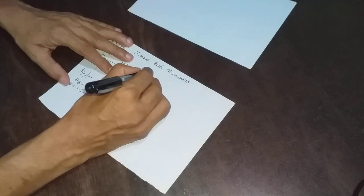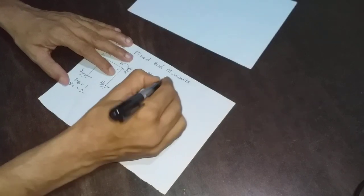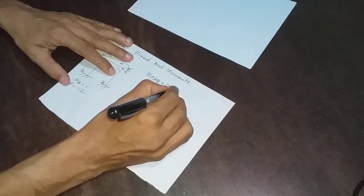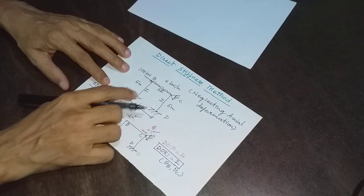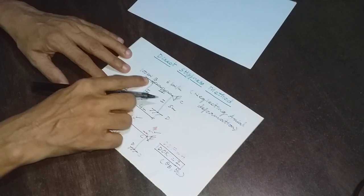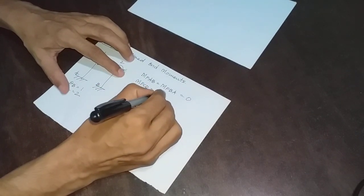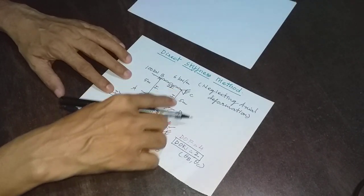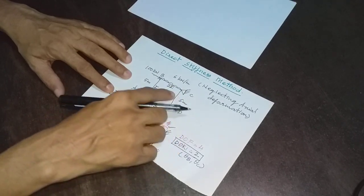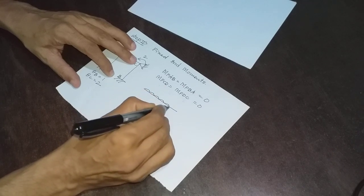Fixed end moment for AB and BA equals zero because there is no load acting on member AB. Fixed end moment for CD and DC also equals zero because there is no load on member CD. However, for member BC, there is a 6 kN per meter load acting on it. If we fix both B and C, the fixed end moments are WL²/12.